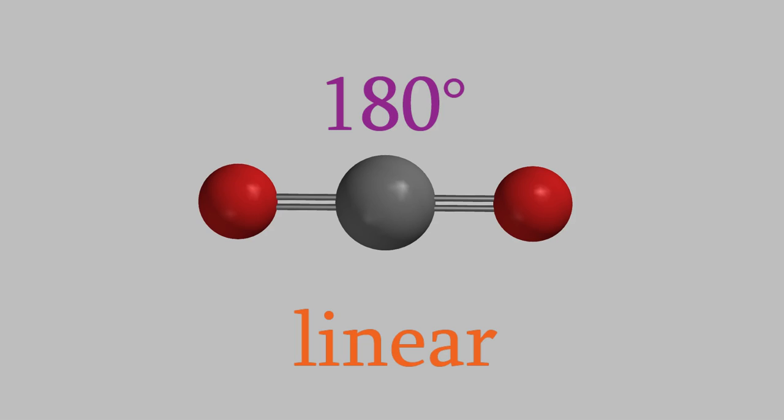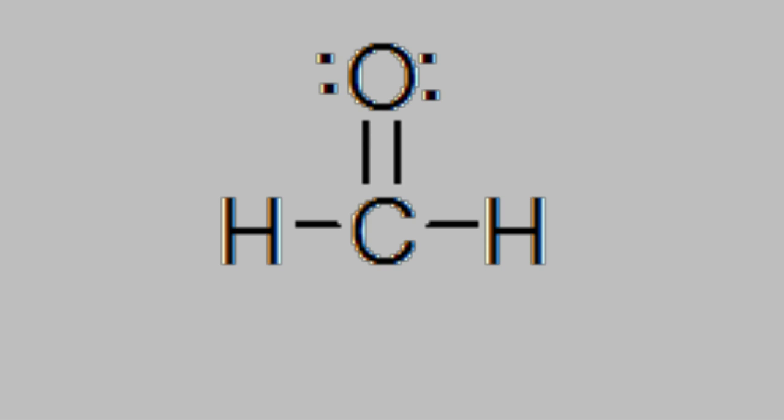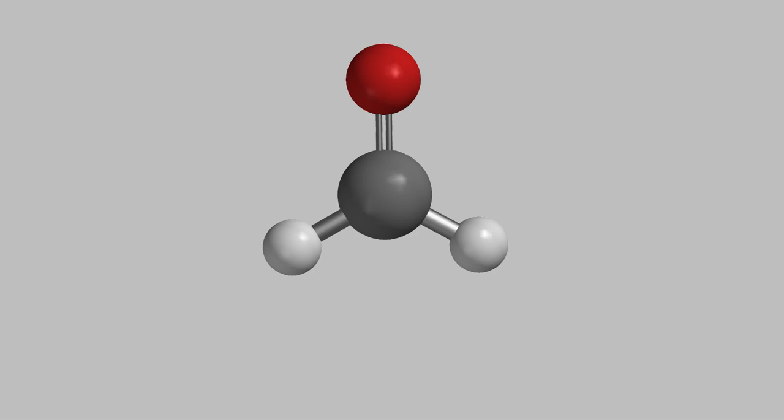What if we have a molecule with three bonds on the central atom, as in formaldehyde? Here's the Lewis structure of formaldehyde. Once again, the bonds get as far apart as possible, which means the angle between each of them is 120 degrees.